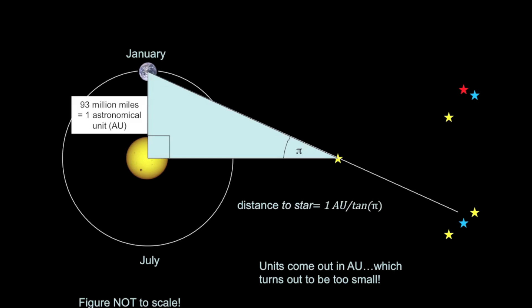But if we figure out this distance, even given a value of the parallax angle, the units come out in astronomical units, AUs, which are not large enough for the distances to the nearby stars.